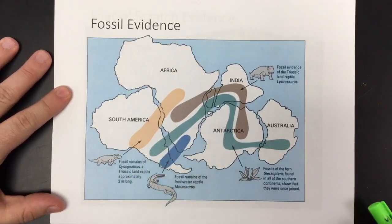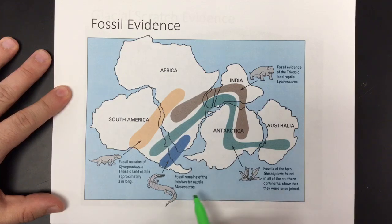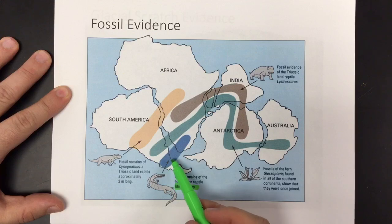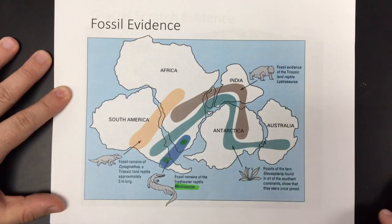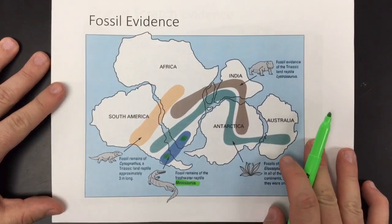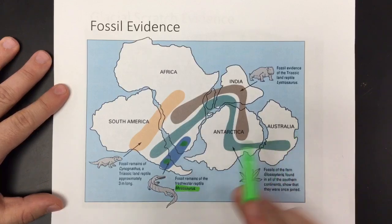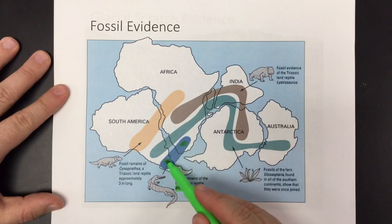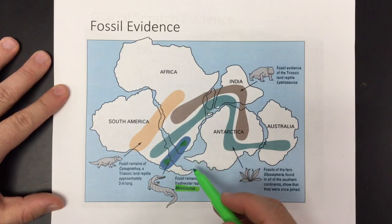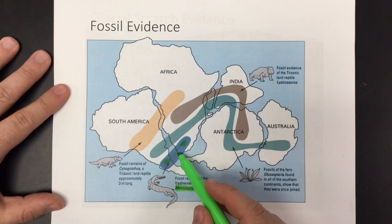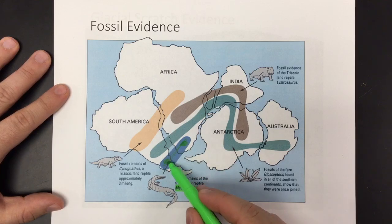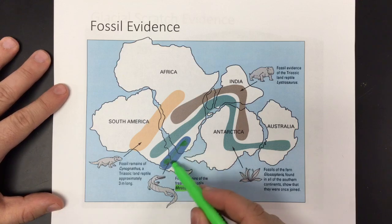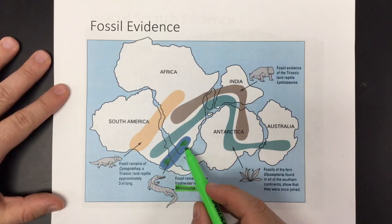The first piece of evidence that Wegener used was from fossils. He noticed that this animal, Mesosaurus, which was kind of like a freshwater lizard, had fossils found on both South America and Africa. This wasn't the kind of animal that could have swam across the Atlantic Ocean, so how could there be fossils in both places? Well, maybe at one time the two continents were together and this was the range of Mesosaurus. After Mesosaurus died 250 million some years ago, those continents with the fossils on them moved apart.